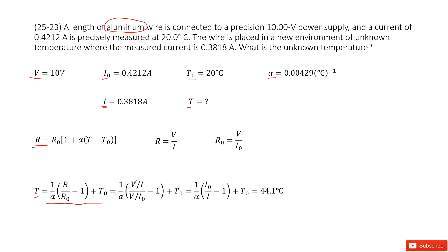And we replace R as V over I, R₀ as V over I₀. V, V can cancel. So this can be simplified as this one. Now you can see you can input all the given quantities. Get the final answer there. Thank you.